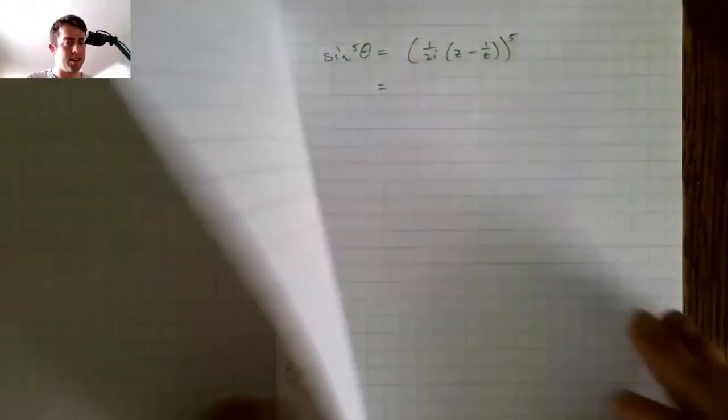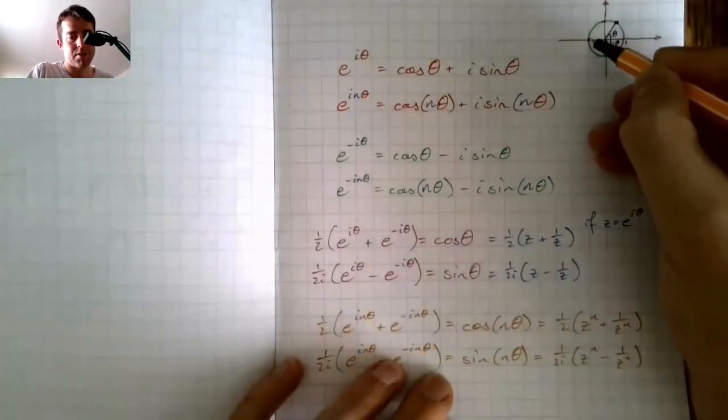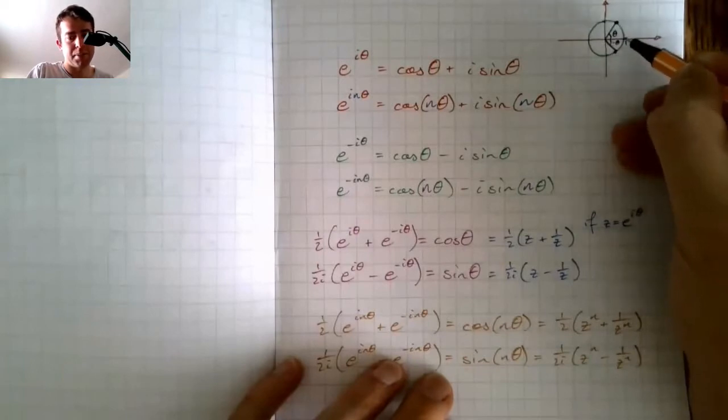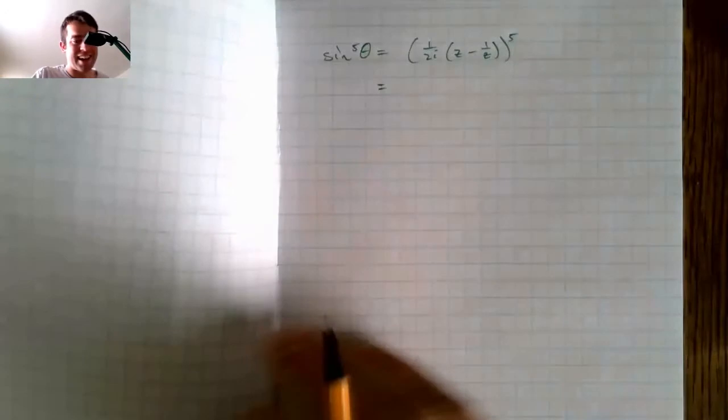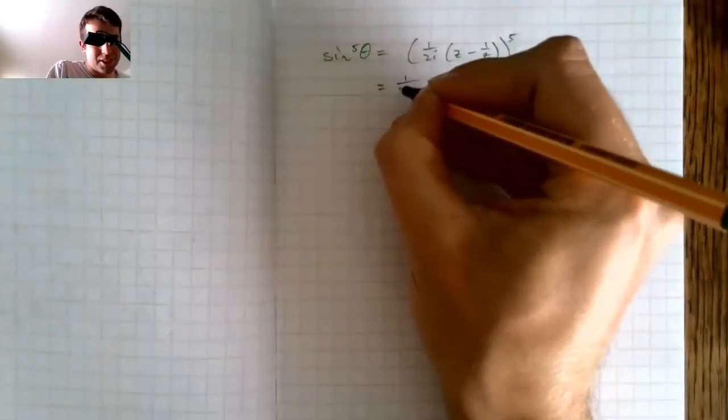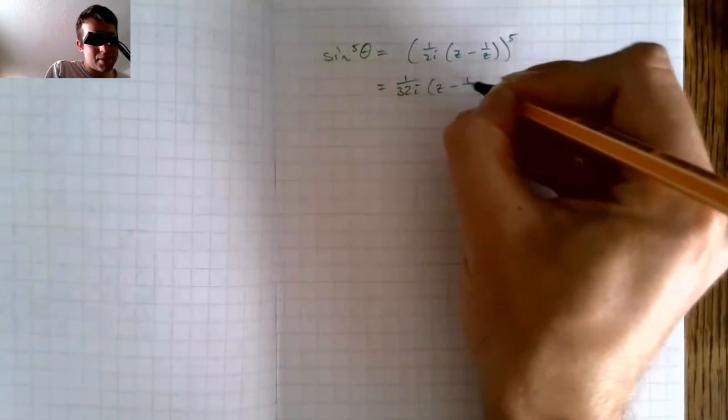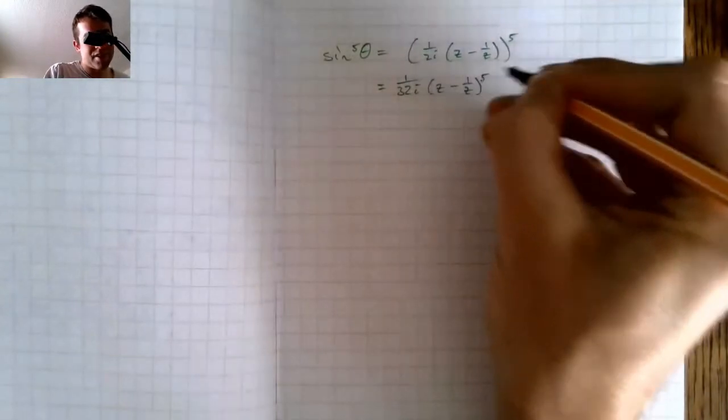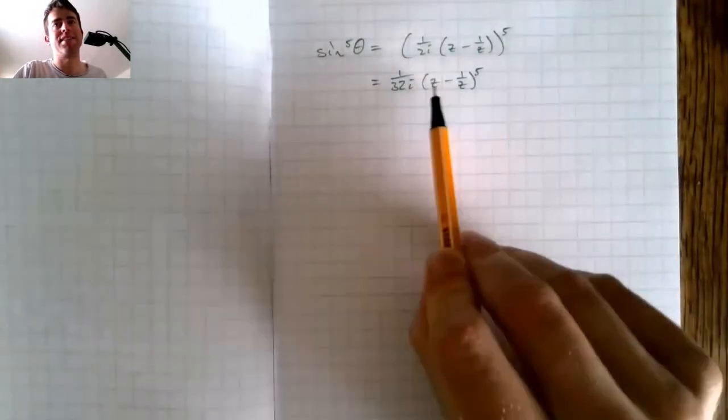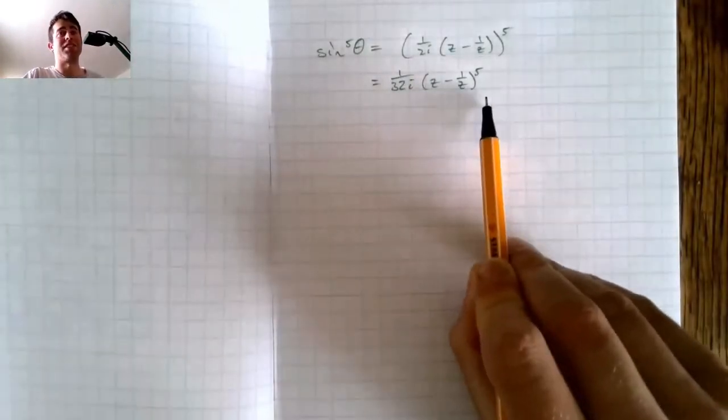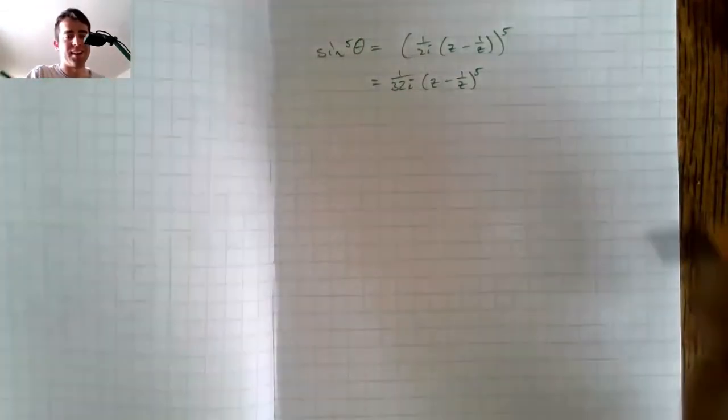i is here, i squared, i cubed, i to the power of four. i to the power of five is just i again. Cracking. So this is one over 32, i, z minus one over z to the power of five. Now what I'm going to do now is expand this bit using the binomial expansion. So again, bit of video wizardry here. Let's go.